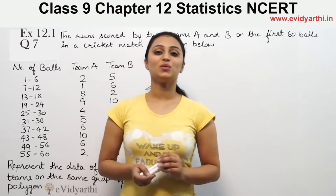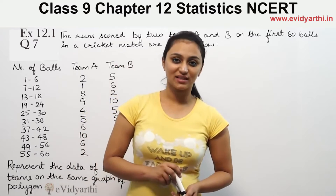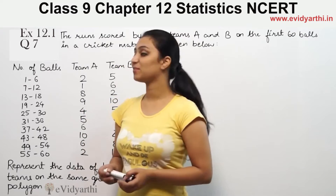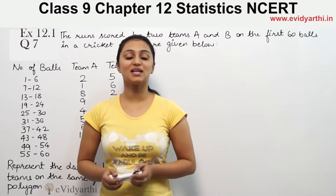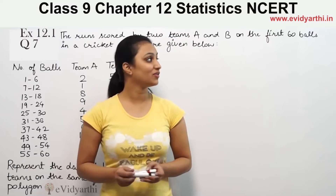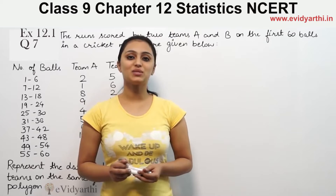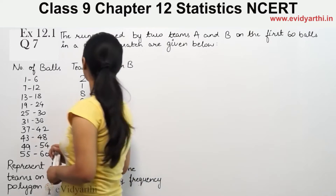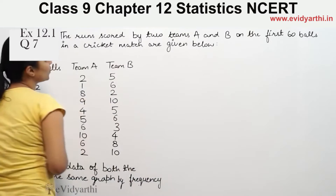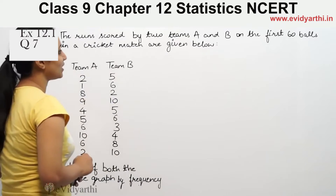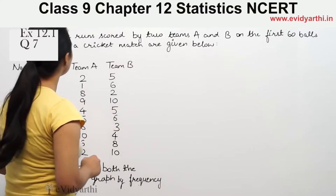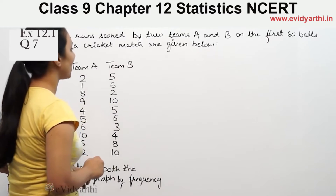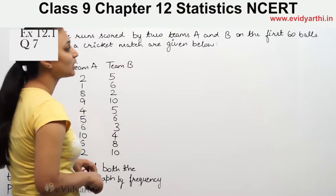Hi, this is Krishpov with another question. This is question number 7 from exercise 14.3, page 260 from NCERT. It says that runs scored by two teams A and B on the first 60 balls in a cricket match are given.